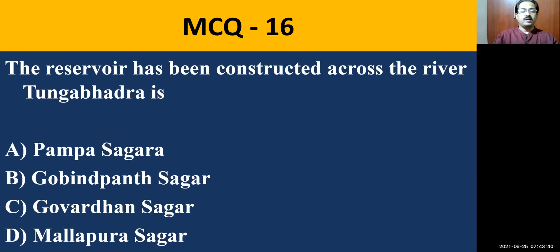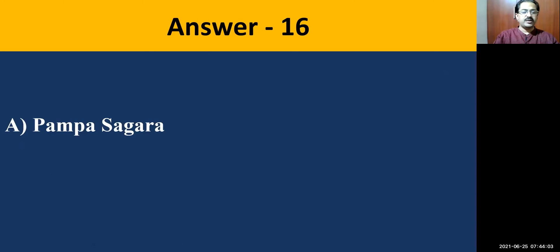MCQ question number sixteen: The reservoir constructed across River Tungabhadra is — Pampa Sagara, Gobindapanth Sagar, Govardhana Sagar, or Mallapura Sagar. You need to be very careful. The correct answer is Pampa Sagara, located at Mallapura village in Karnataka, in the Ballari district — now a new district called Vijayanagara.